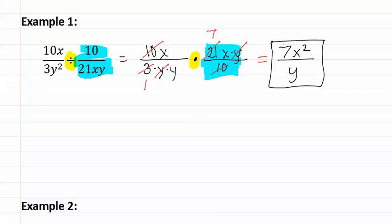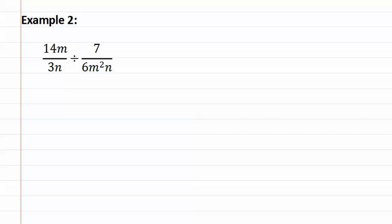Let's look at example two. In example two, we have another division problem. You start by writing the first fraction, then we turn the division sign into a multiply and then we invert the second fraction.